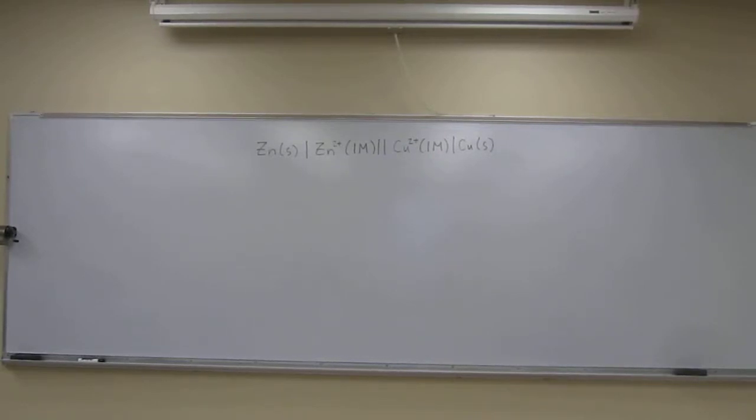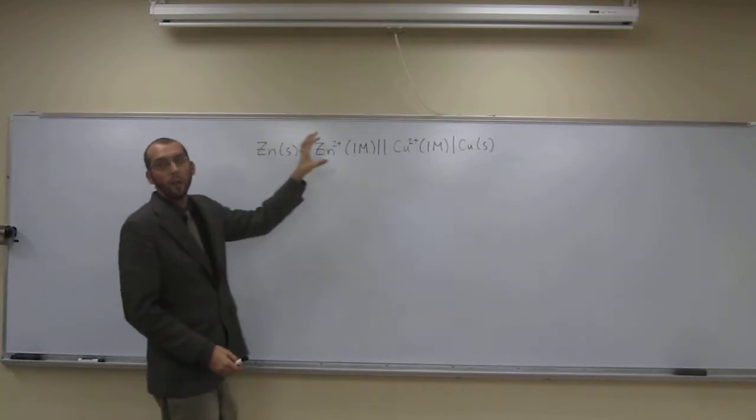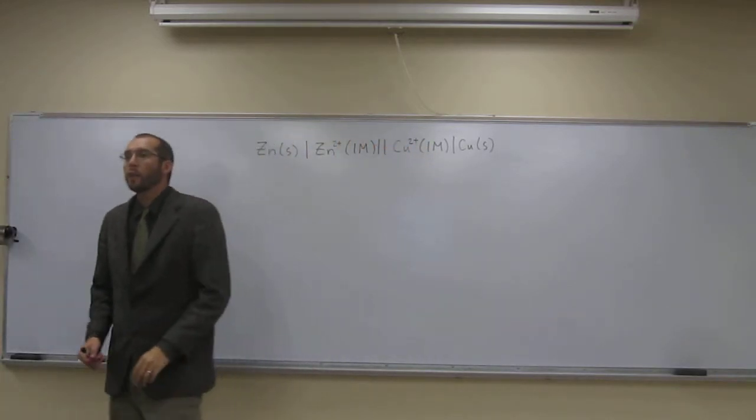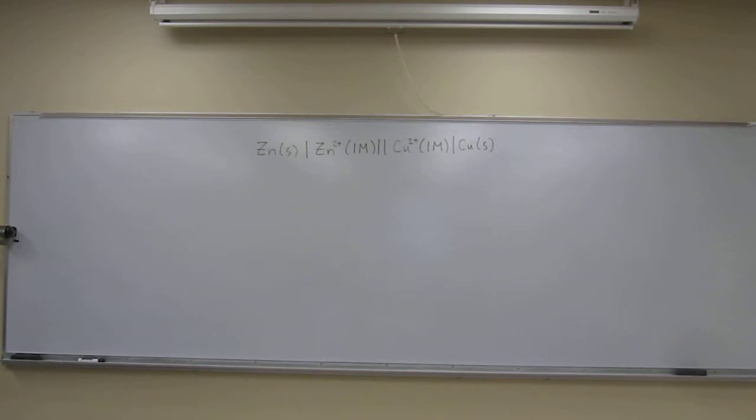Let's try this problem. Shown is the shorthand notation for the cell diagram of the Daniel cell. Label all the parts, show the two half reactions, and show the balanced redox equation. Why do we write things in this shorthand notation? Just so we can write it all on one line, and it's very descriptive, even though it looks kind of weird.